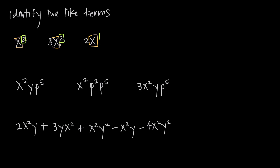So when it comes to adding and subtracting, I can add these first two terms together, but I can't combine them with this third term. Here I have essentially 1x squared and here I have 3x squared. When I add one of them to three of them, I get 4x squared. And since I can't combine the third term, I just write plus 2x.